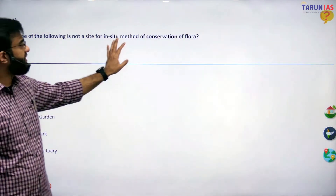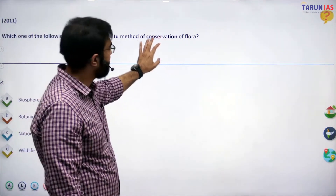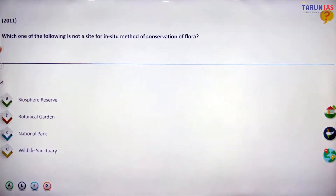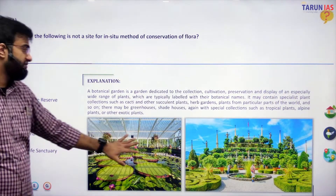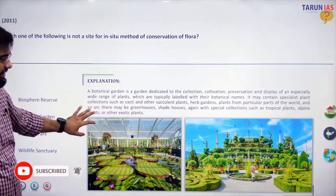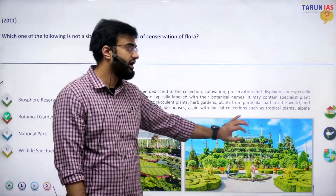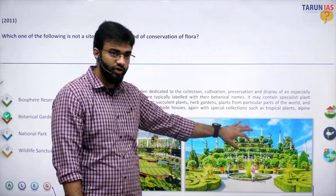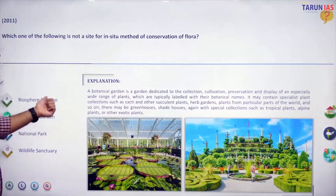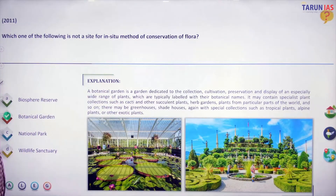Which of the following is not a site for in-situ method of conservation? In-situ means at that place, in their natural habitats. Botanical gardens are artificially created green spaces — glasshouses and greenhouses — where species have been removed from their natural habitat and cultivated in an artificially created environment, unlike biosphere reserves, national parks, or wildlife sanctuaries.